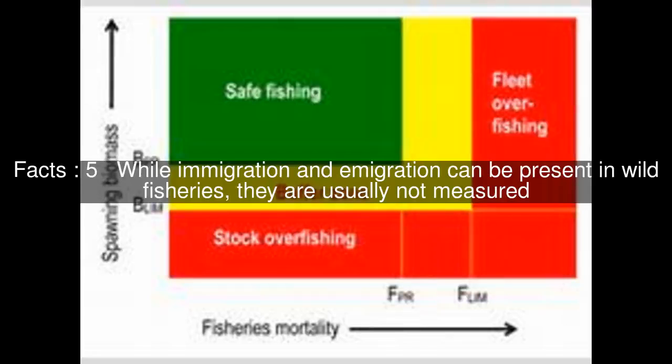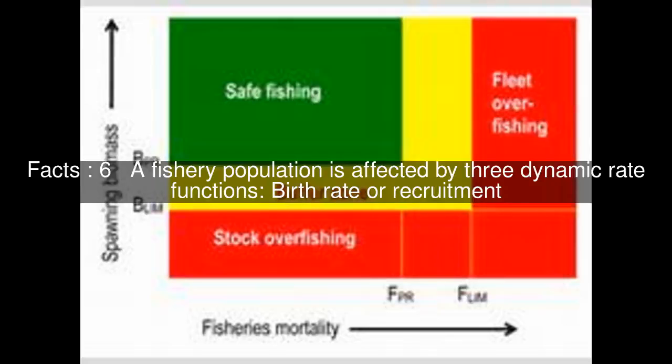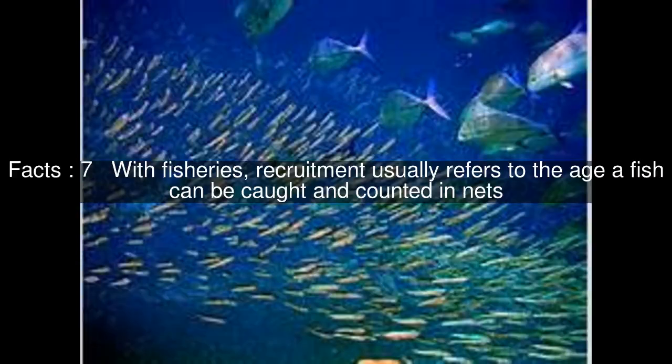While immigration and emigration can be present in wild fisheries, they are usually not measured. A fishery population is affected by three dynamic rate functions: birth rate or recruitment. With fisheries, recruitment usually refers to the age at which fish can be caught and counted in nets.